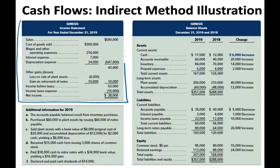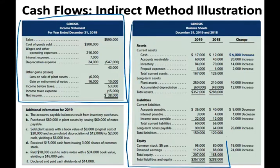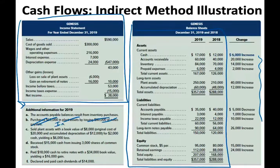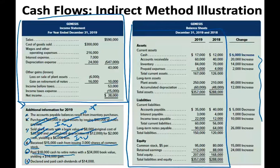We have the income statement for Genesis, the two-year balance sheet with related changes, and additional information. In the prior session, we already looked at B — we purchased a plant asset, which deals with investing — and C, which also deals with investing. Letter A dealt with operating. So we're already done with A, B, and C. Now we have D, E, and F. Under D, we received $15,000 cash from issuing 3,000 common shares. Under E, we paid $18,000 cash to retire a note with a $34,000 book value, yielding a gain of $16,000 reflected in the income statement. Under F, we declared and paid a cash dividend of $14,000.